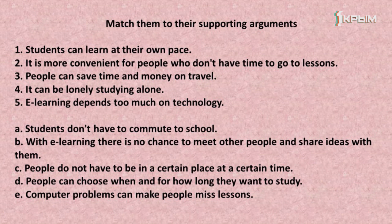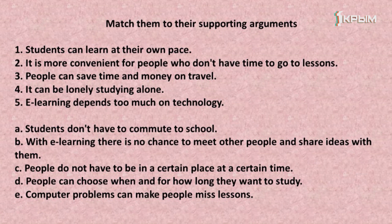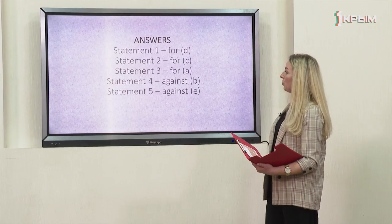E-learning depends too much on technology. Arguments: students don't have to commute to school; with e-learning there is no chance to meet other people and share ideas with them; people do not have to be in a certain place at a certain time; people can choose where and for how long they want to study; computer problems can make people miss lessons.